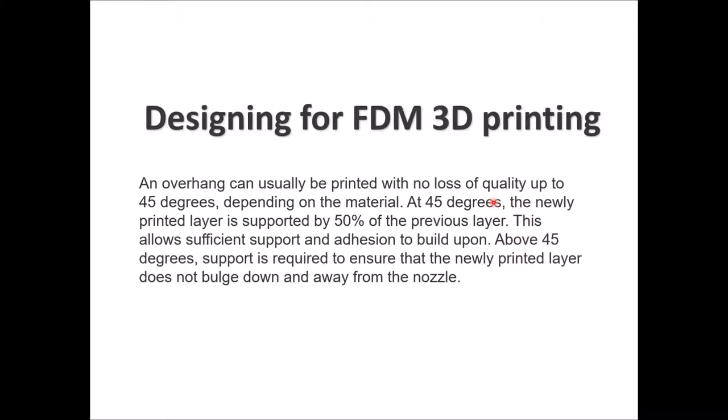To print an overhang without losing quality, you need to print up to 45 degrees inclination between each layer and the next. You need a gradual inclination — reducing a 90-degree angle to 45 degrees maximum, with less being better. When printing new layers at 45 degrees, they are supported by 50% of the previous layer, which allows sufficient support and adhesion. If you have above 45 degrees and no other solution, you need to include support so the newly printed layer does not bulge down and away from the nozzle.